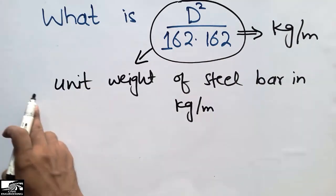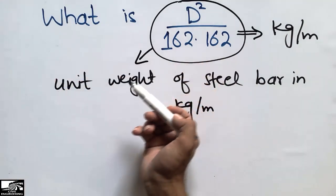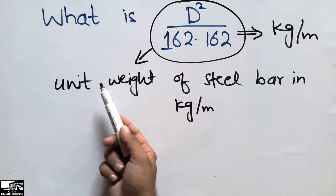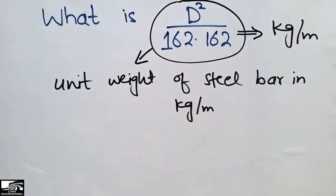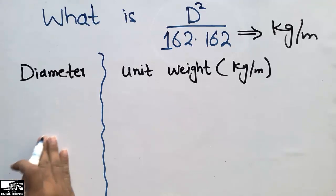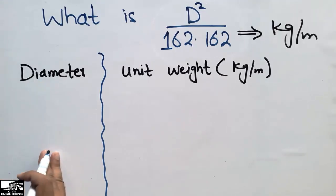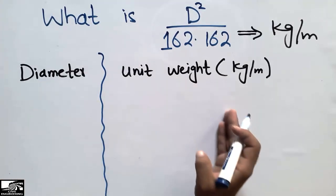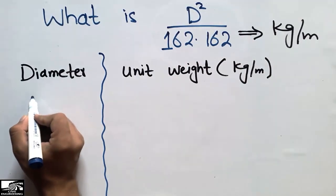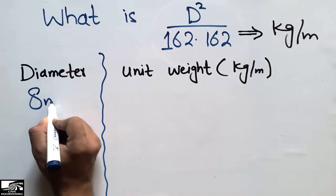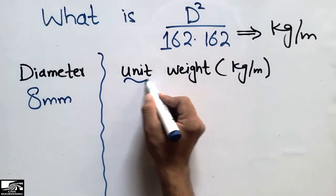Now I'm going to show you different steel bar diameters and how we find the unit weight of each. On the left side I will mention the different diameters of the bar, and on the right side I will find their unit weight in kilogram per meter. Let's start from the smallest bar — the 8 millimeter diameter bar.